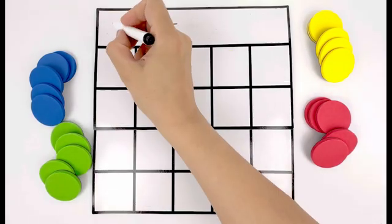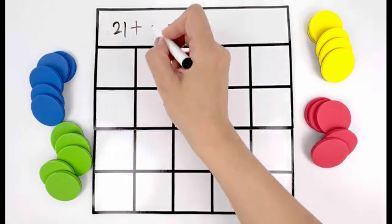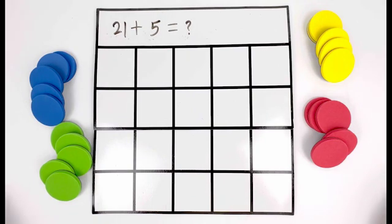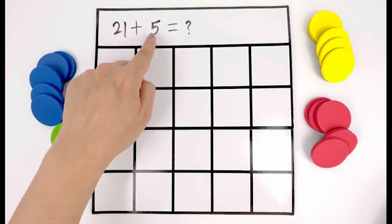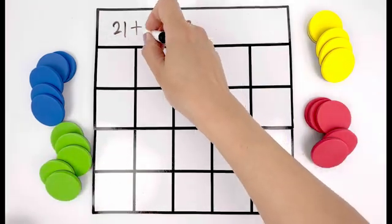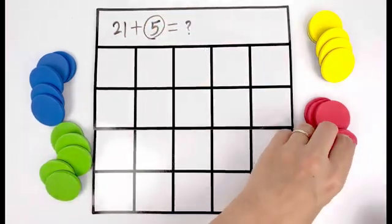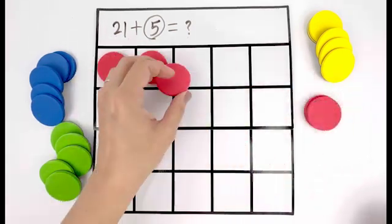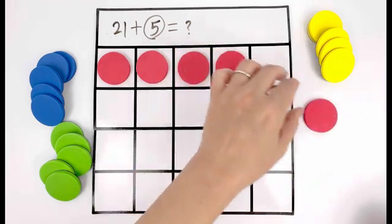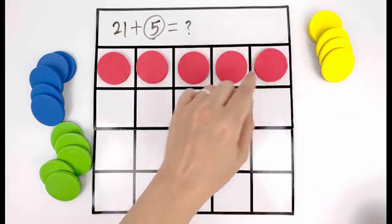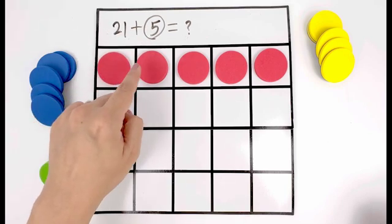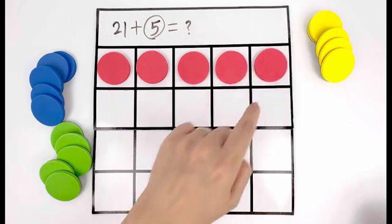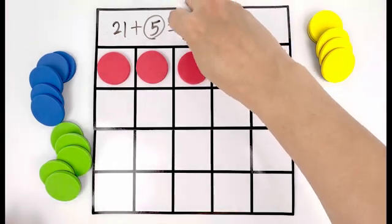Let's practice another example. Twenty-one plus five equals. So we keep number twenty-one and only count five circles. One, two, three, four, five. Twenty-one, twenty-two, twenty-three, twenty-four, twenty-five, twenty-six. It equals twenty-six.